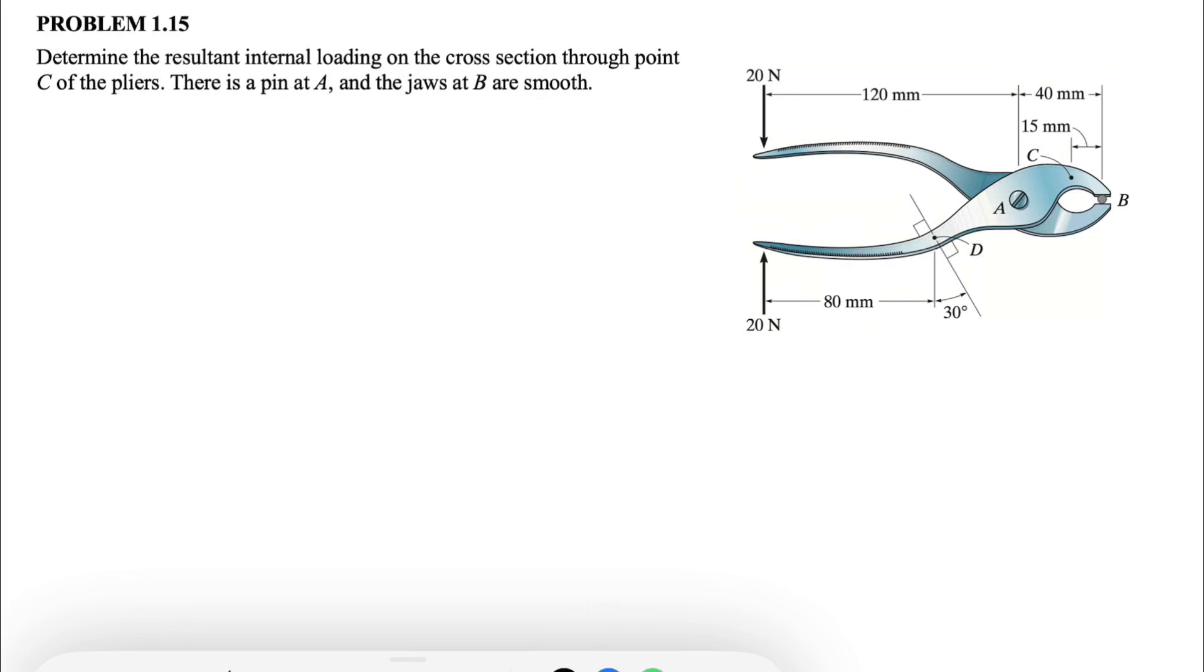Alright guys, welcome back to the channel. So in today's video, we're going to be solving question 15 from the first chapter of Hibbeler textbook Mechanics and Materials. In this one we need to determine the resultant internal loading on the cross-section through point C of the pliers.